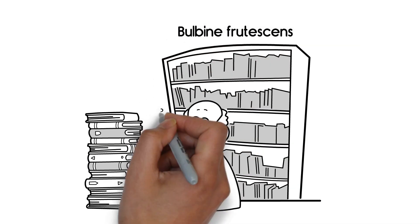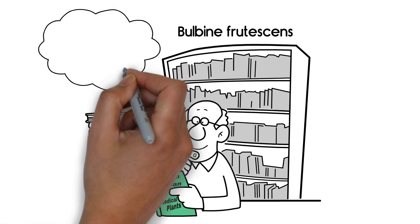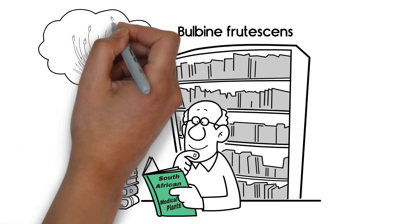Bulbine frutescens, a beautiful succulent plant with its fleshy leaves, catches his interest since he grows it in his greenhouse.